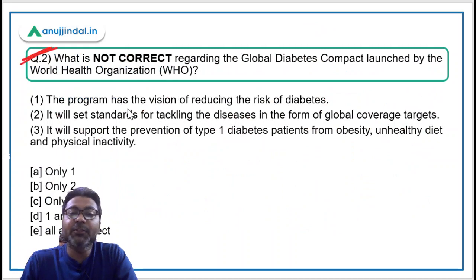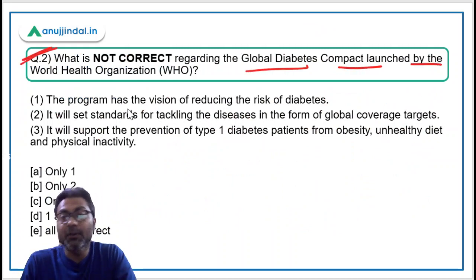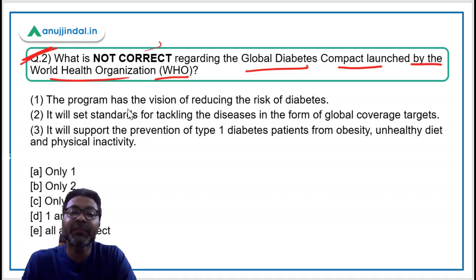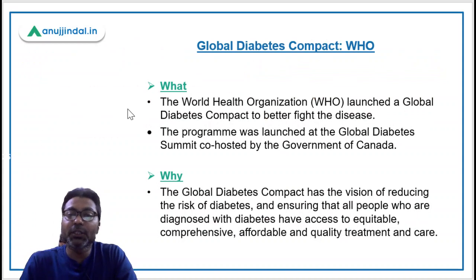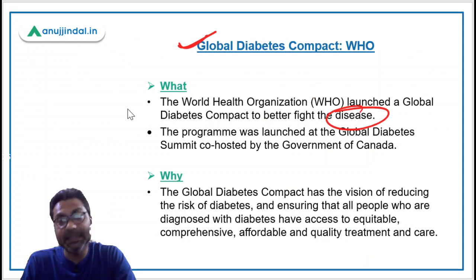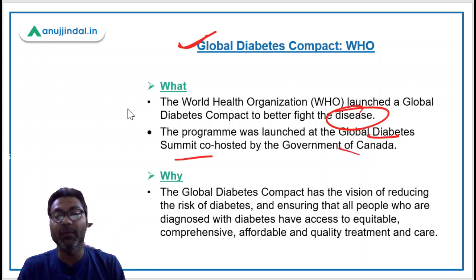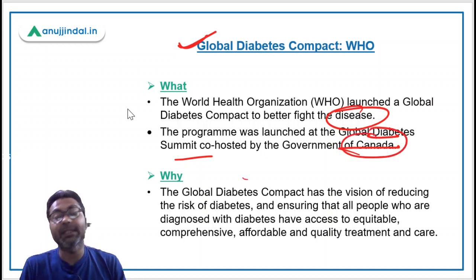Question two: which of the following is not correct regarding the Global Diabetes Compact launched by the World Health Organization? Recently a program known as the Global Diabetes Compact has been launched by WHO to better fight diabetes. It was launched at the Global Diabetes Summit co-hosted by the government of Canada. You should note down the capital, currency, and name of the Prime Minister of Canada in the comments.